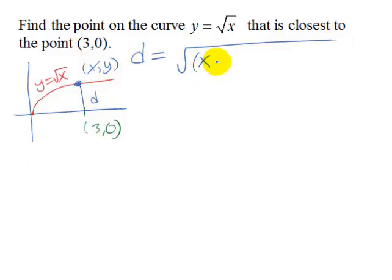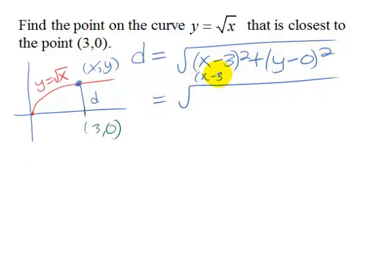So that's the x from one of the points minus the x from the other squared plus the y minus the y from the other point squared. And we can simplify that a little bit. We could multiply this (x-3) by itself. And that's going to be x squared minus 6x plus 9 and then we have plus y squared.